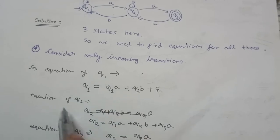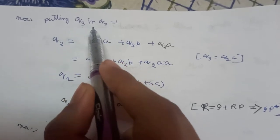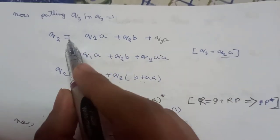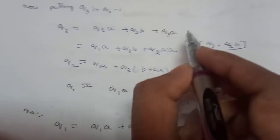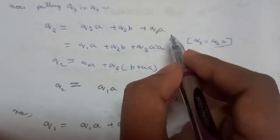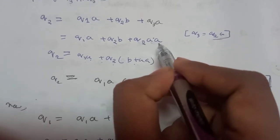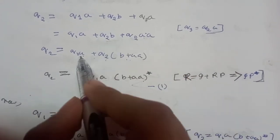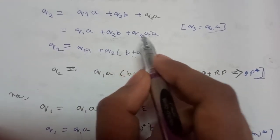Now we solve the equations. First, substitute the value of Q3 into Q2. Q3 = Q2A, so Q2 = Q1A + Q2B + Q3A becomes Q2 = Q1A + Q2B + Q2AA. Taking Q2 as common, we get Q2 = Q1A + Q2(B + AA).